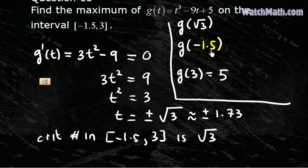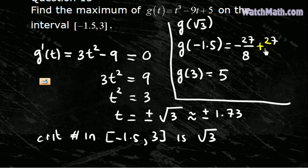Okay, now this is 1.5, which is 3 over 2, so negative 27 over 8, and then plus 27 over 2 plus 5. So if we simplify, this is equal to 108 over 8 and this one is 40 over 8.